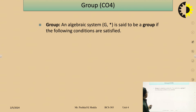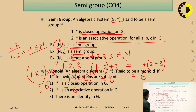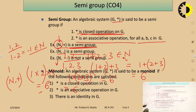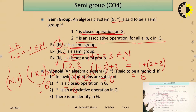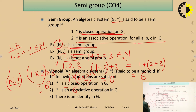For example, consider (N, +). The set of natural numbers under addition holds the closure operation and the associative property, as we already saw in the semi-group discussion. For the third condition, the identity element for addition is 0 — the additive identity. However, 0 is not part of the natural numbers, so (N, +) is NOT a monoid.